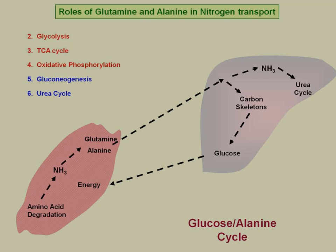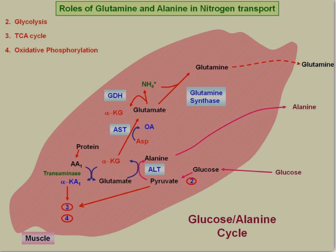This demonstrates the convergence of five pathways between two different organs. In the muscle, glucose comes in and goes through glycolysis — that's step two — forming pyruvate, which goes into the citric acid cycle. We also have proteins being broken down to amino acids, and through transamination, alpha-keto acids are formed, which go into the TCA cycle as well. During the formation of alpha-keto acids, the nitrogens are transferred to alpha-ketoglutarate to form glutamate. That glutamate can transfer the nitrogen to a pyruvate forming alanine, and the alanine can then carry the nitrogen to the liver.